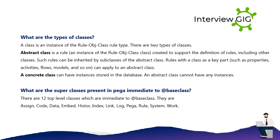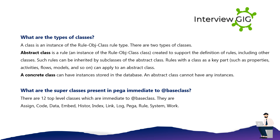What are the superclasses present in PEGA immediate to a basic class? There are 12 top-level classes which are immediate to a basic class. They are: assign, code, data, embed, history, index, link, log, PEGA, rule, system, and work.